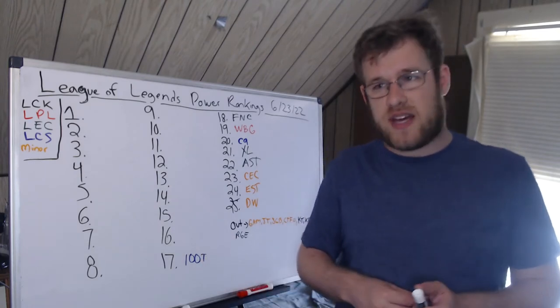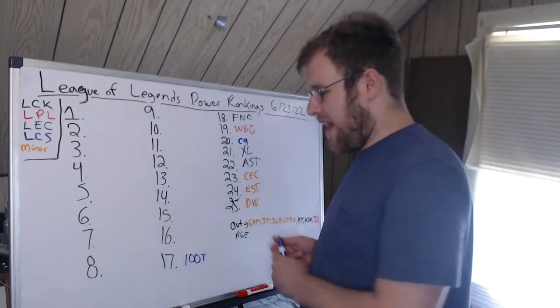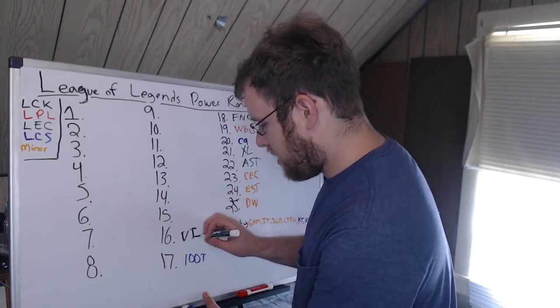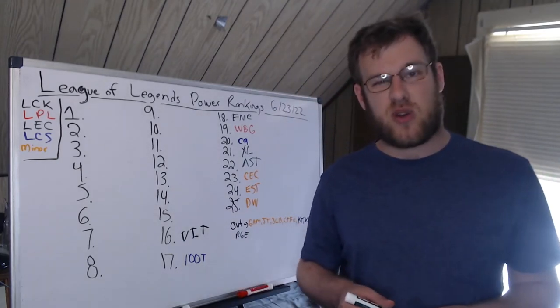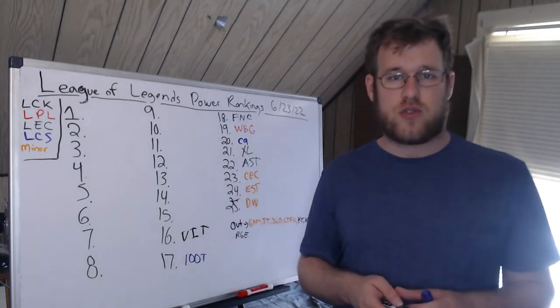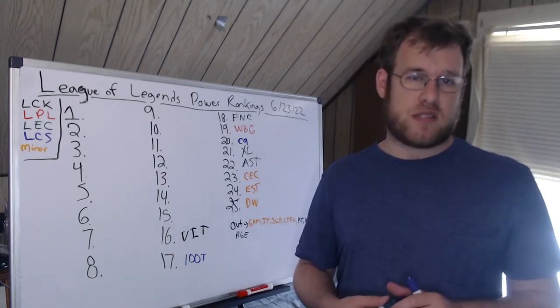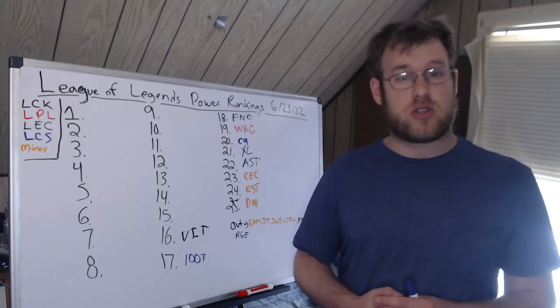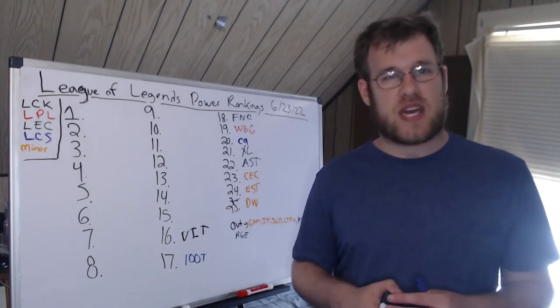16th, I have Vitality. Vitality continues to kind of give us mixed results. What do we think about Vitality? Well, on paper they're definitely on this chart, they're a very good team on paper. I like to see that Alphari was willing to play some tanks this past week. I think I saw Sejuani and Ornn in two of the three games, and that is huge.